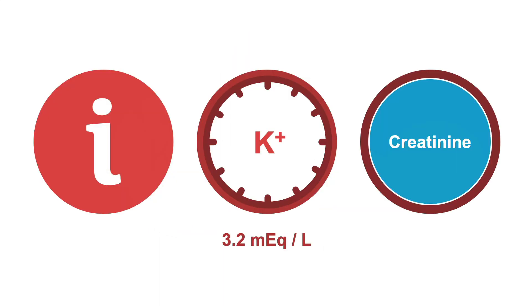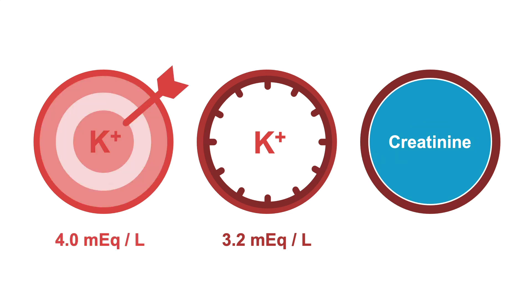Let's do an example. The patient's serum potassium is 3.2 milliequivalents per liter. You want them to reach a goal potassium of 4.0 milliequivalents per liter. Their creatinine is 2 milligrams per deciliter. Now let's do the math.